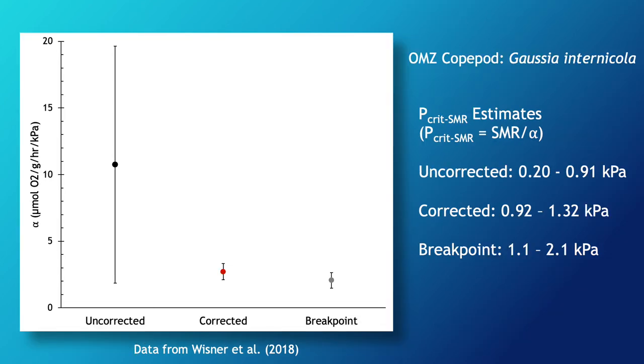Reanalyzing data from another oxygen minimum zone copepod species found similar results. The uncorrected values are extremely variable, but the corrected values give more precise and realistic estimates of P_crit that are similar to existing methods and make more sense in the animal's ecological context. P_crit estimates post correction or using the breakpoint method are almost 100% higher than those derived from uncorrected values.